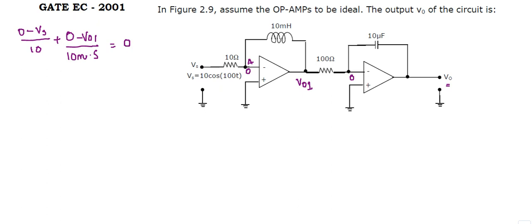This is equal to 0, hence we get as V0,1 is equal to minus of 10, putting the value of Vs also, 10 into cos of 100t multiplied by 10 to the power minus 3 into S.